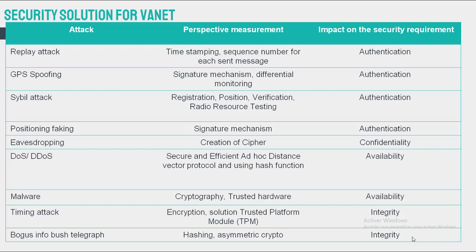For eavesdropping attacks, the solution is to use encryption methods, especially for important data such as positioning data, identification, and data that could put the driver's life in danger. For denial-of-service or distributed denial-of-service attacks, we can use digital signatures to secure communication between nodes. For malware, using trusted hardware makes it particularly impossible to change existing protocols and values except by authorized parties. For timing attacks, the solution is to use a timestamp mechanism and address time synchronization between entities. For bogus information, hashing and symmetric cryptography are used to deal with the problem.